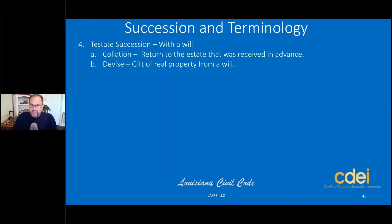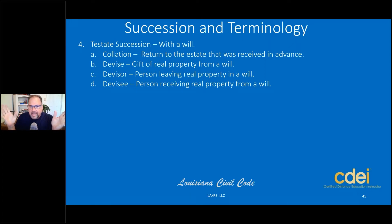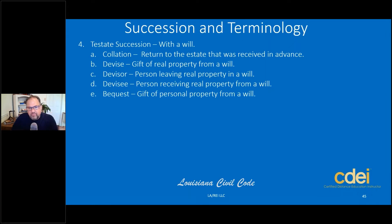A devise is real property gifted through a will. A devisor is the person leaving real property in a will; the devisee is the person receiving it. Real property — immovables like a house or investment property — is called a devise. A bequest, by contrast, is a gift of personal property from a will: cars, airplanes, jewelry — movables in Louisiana. So devise = real property; bequest = personal property.